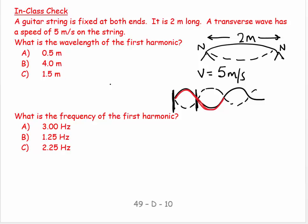So the simplest pattern is half of a wavelength. So we say L equals lambda over 2, so lambda equals L times 2, which equals 2 times 2...